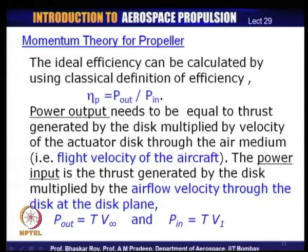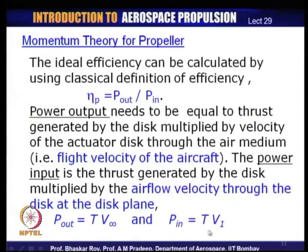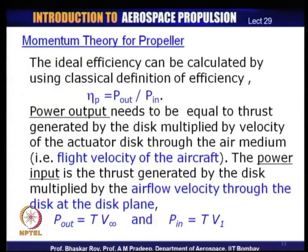Power output is thrust times V∞ (the aircraft flight velocity, taken as far upstream velocity) and power input is the activation power — thrust times the velocity through the actuator disc. This allows us to find out the values of power input and power output, from which we can then find what the propeller efficiency would be using this actuated disc model.